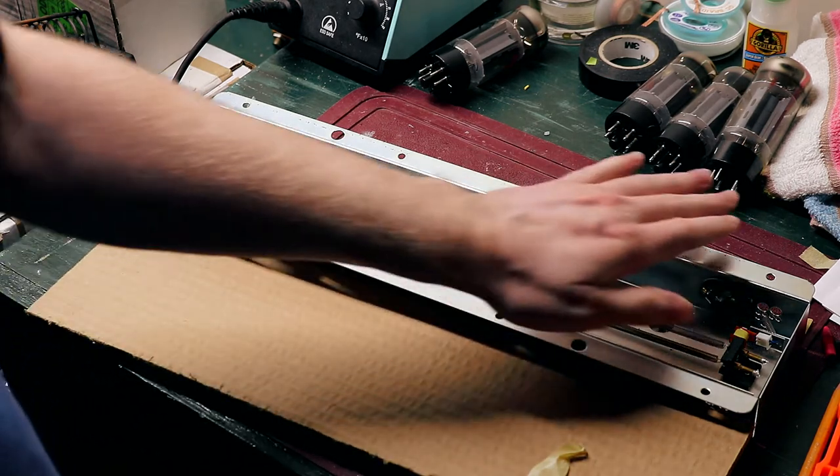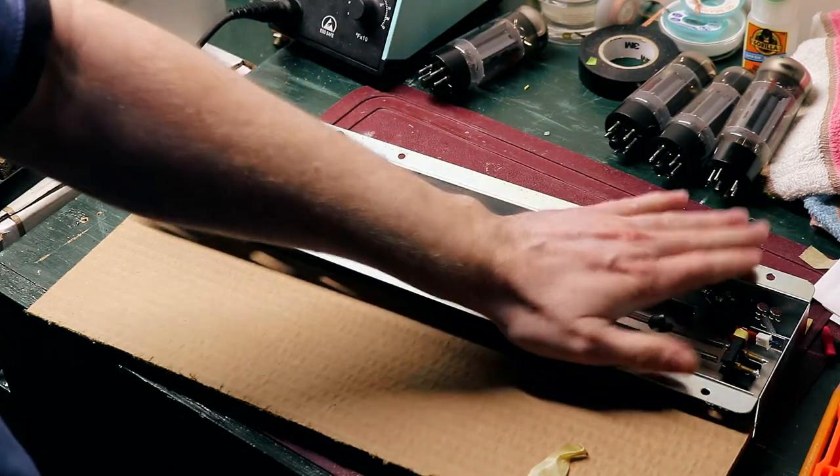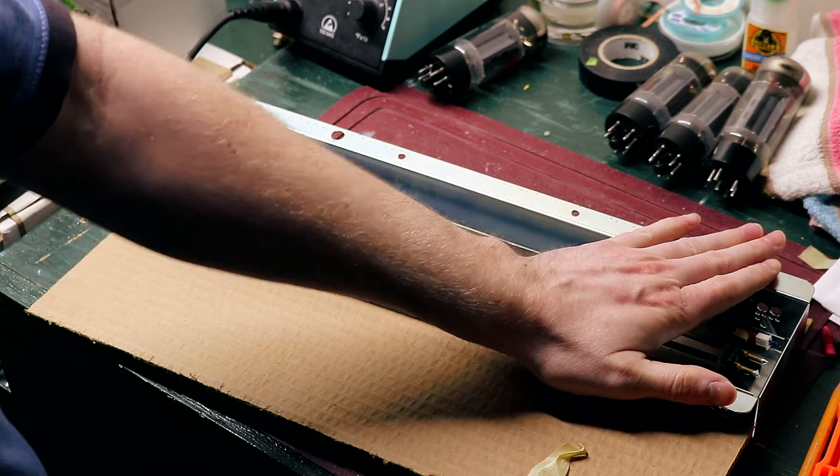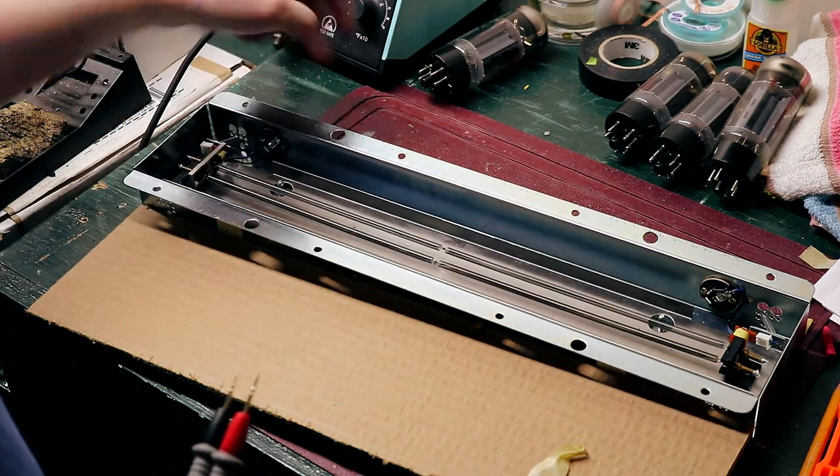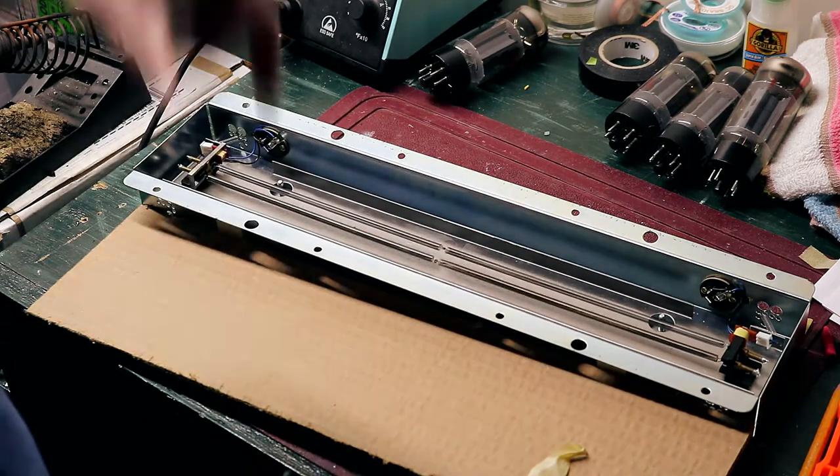So the way that this tank is set up, this is the input. Input is actually stamped on the outside here. This would come from the send of the amplifier. This is the output of the tank, this would go to the return or input of the amplifier itself.